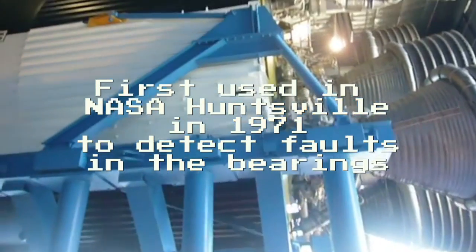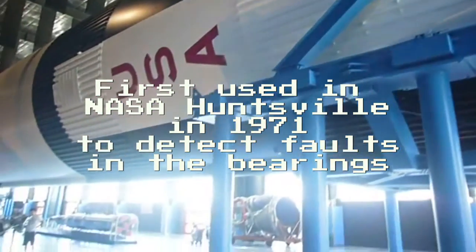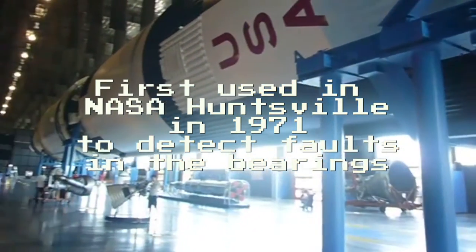The first use of the envelope detector was in 1971. NASA Huntsville used a program to detect bearing defects, but this approach was not capable of detecting one set of bearing defects. The discovery of high frequency vibration and envelope detection was almost accidental. This program effectively detects early signs of bearing defects. This technique was used for the following five to ten years.